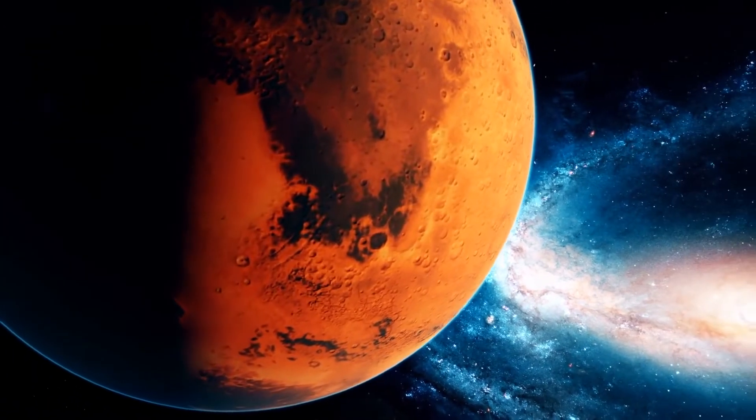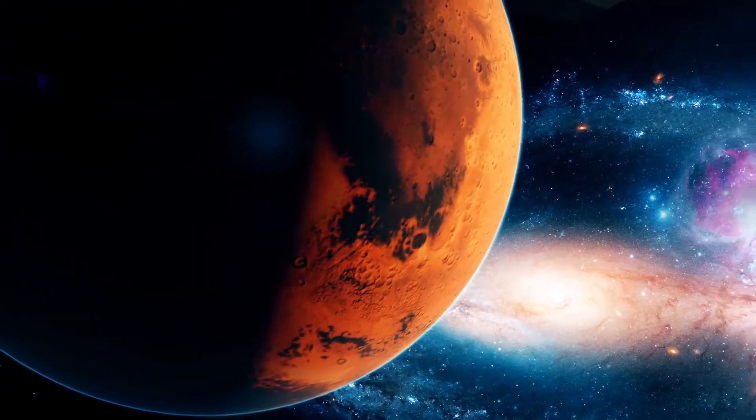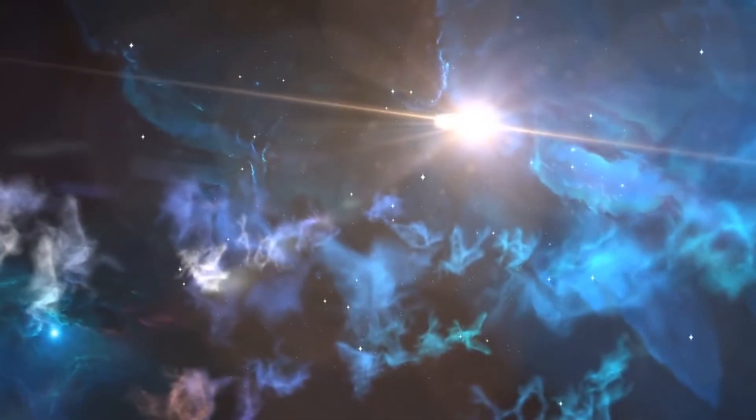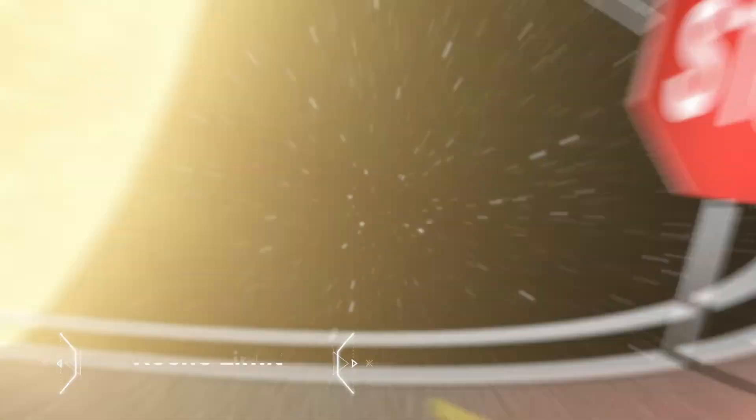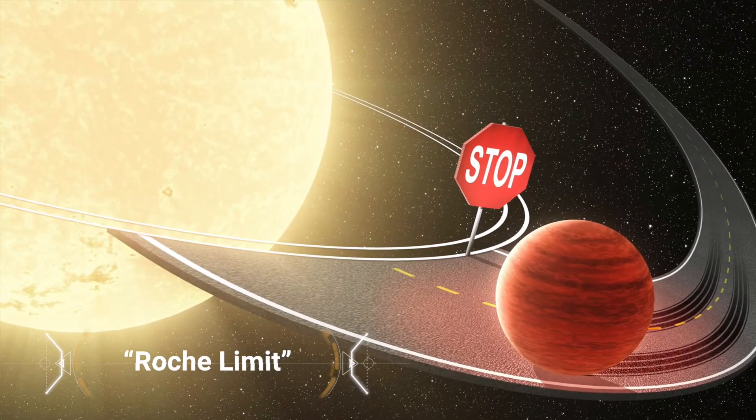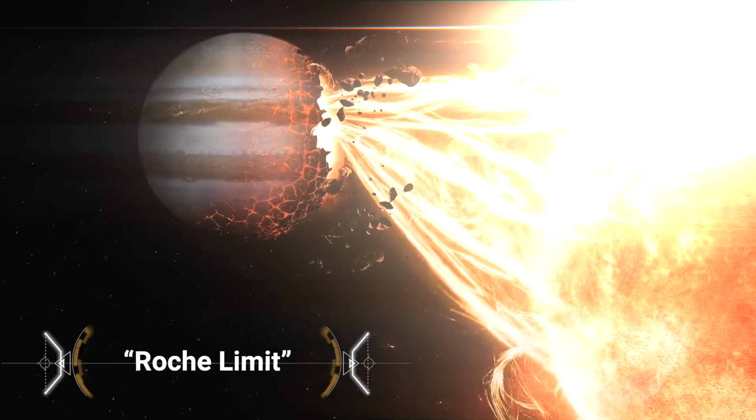The planet orbits very close to its star, close enough to become tidally locked as we mentioned, but any closer, and the planet would pass the star's so-called Roche limit, beyond which the tidal forces are so great that the planet would be torn apart.